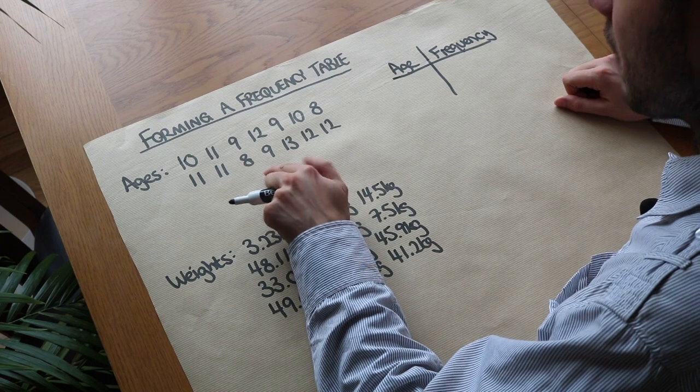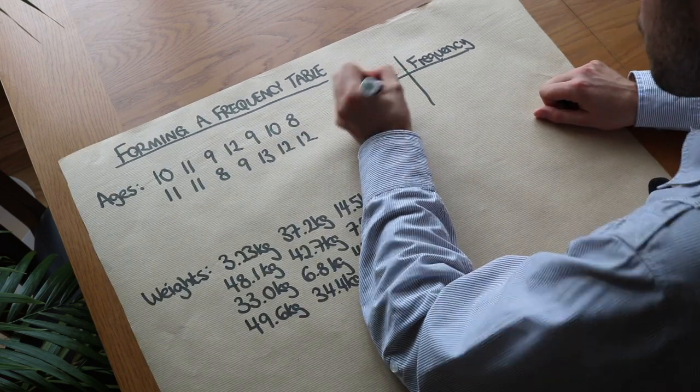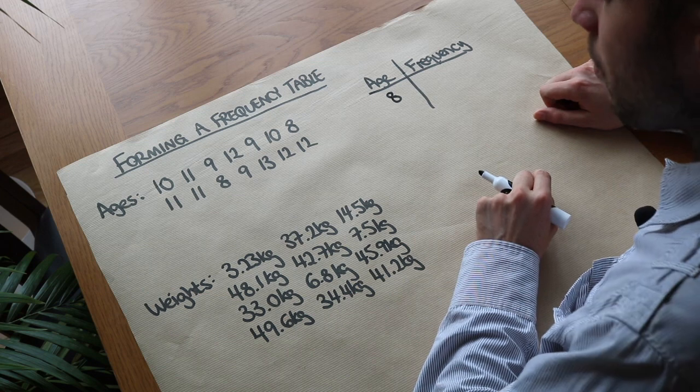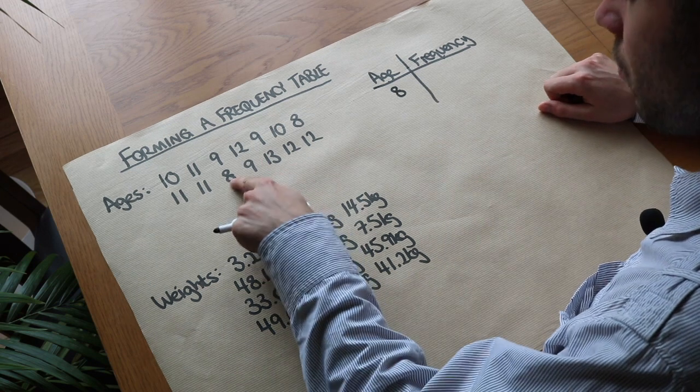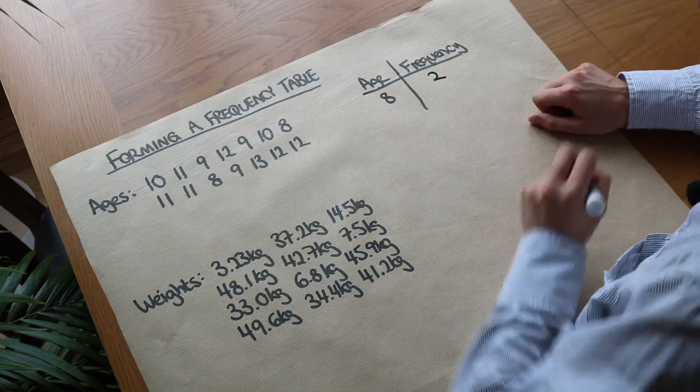So let's look at the smallest value we have here. We can see it's eight. So an age of eight, how many times does it occur? Well we can see it once, twice, so the frequency would be two.